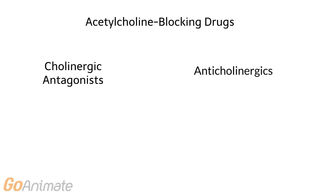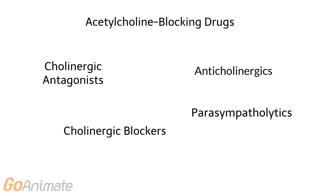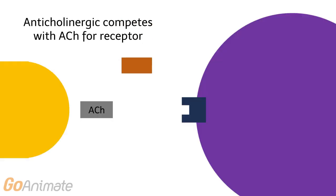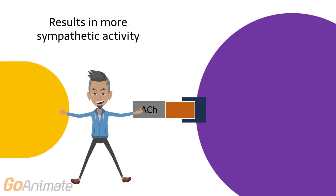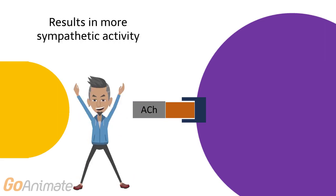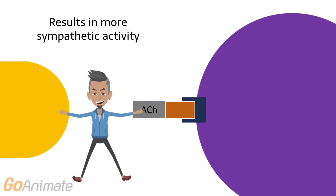Acetylcholine blocking drugs have several names, including cholinergic antagonists, cholinergic blockers, anticholinergics, and parasympatholytics. These drugs work by attaching to cholinergic receptors and blocking the effects of acetylcholine, so parasympathetic activity is blocked, resulting in more sympathetic activity.